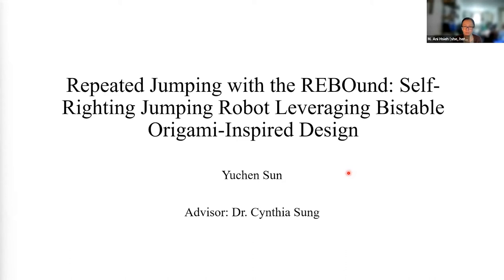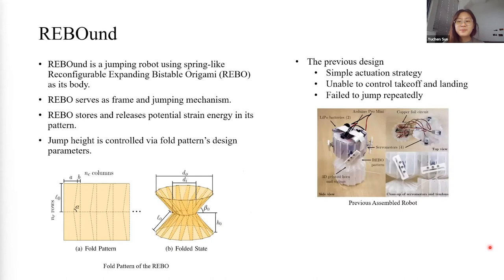Okay, so hi, folks. Today I'm going to present my master thesis titled Repeated Jumping with the REBOund, Self-Righting Jumping Robot Leveraging Bistable Origami Inspired Design. So what is a REBOund? REBOund is a jumping robot that uses spring-like ribs at its body. It is a frame and jumping mechanism. The four independent servo motors serve as the actuator. When the horn pulls up, the REBOund is compressed and ready for jump. So the REBOund stores and releases potential strain energy in its pattern. And the jump height is controlled via the four pattern's design parameters.